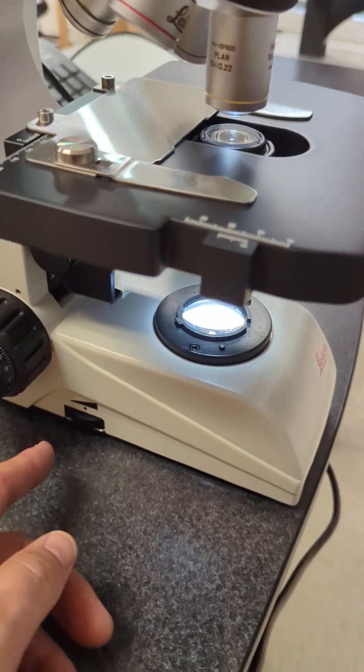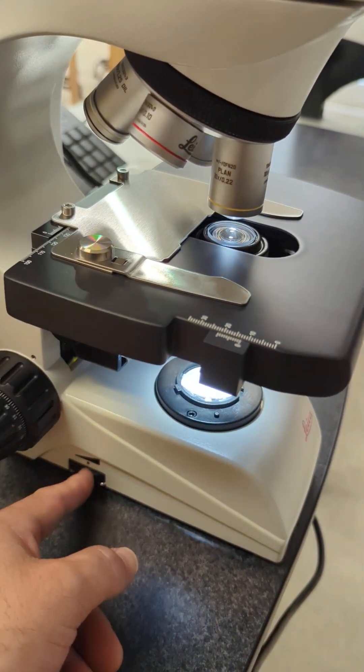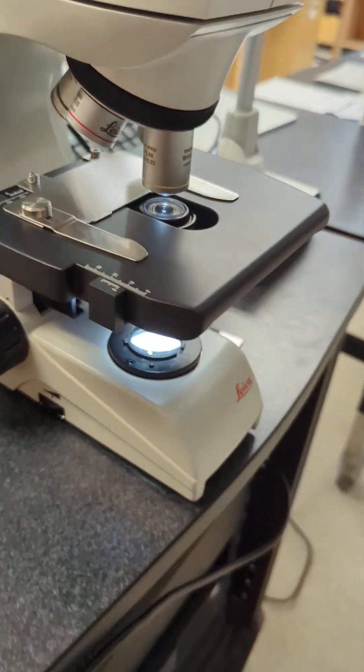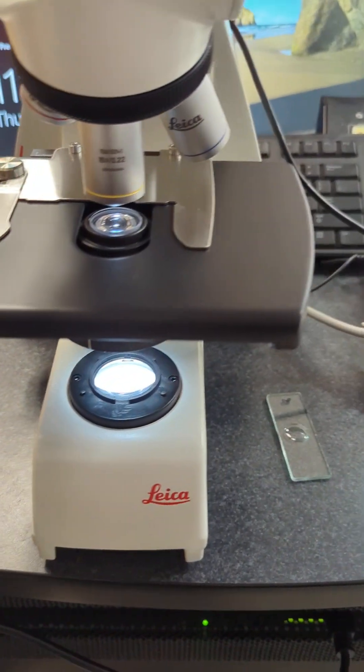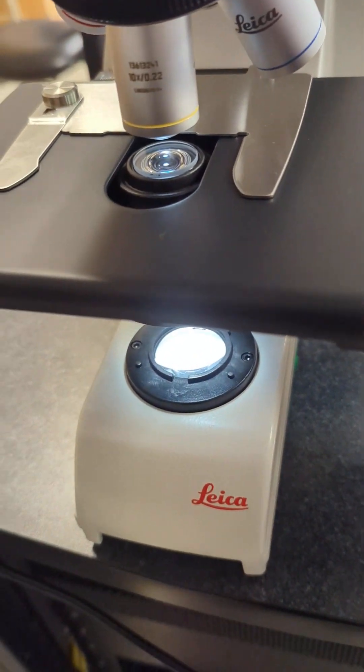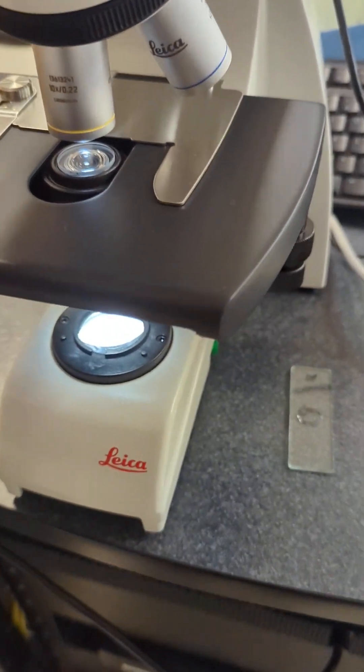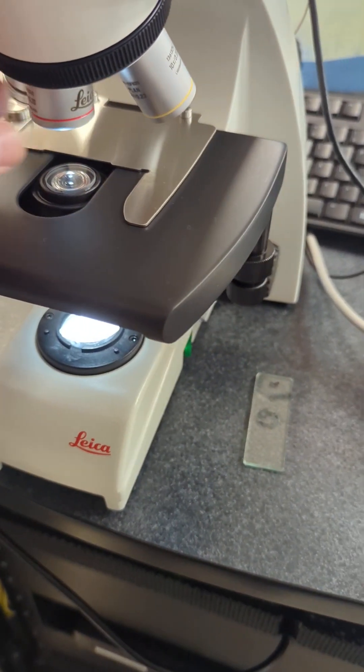On the left side is your light rheostat for brightness and intensity. You've got coarse and fine focus knobs, as well as your right and left XY stage control. I don't have anything on the stage at the moment to look at.